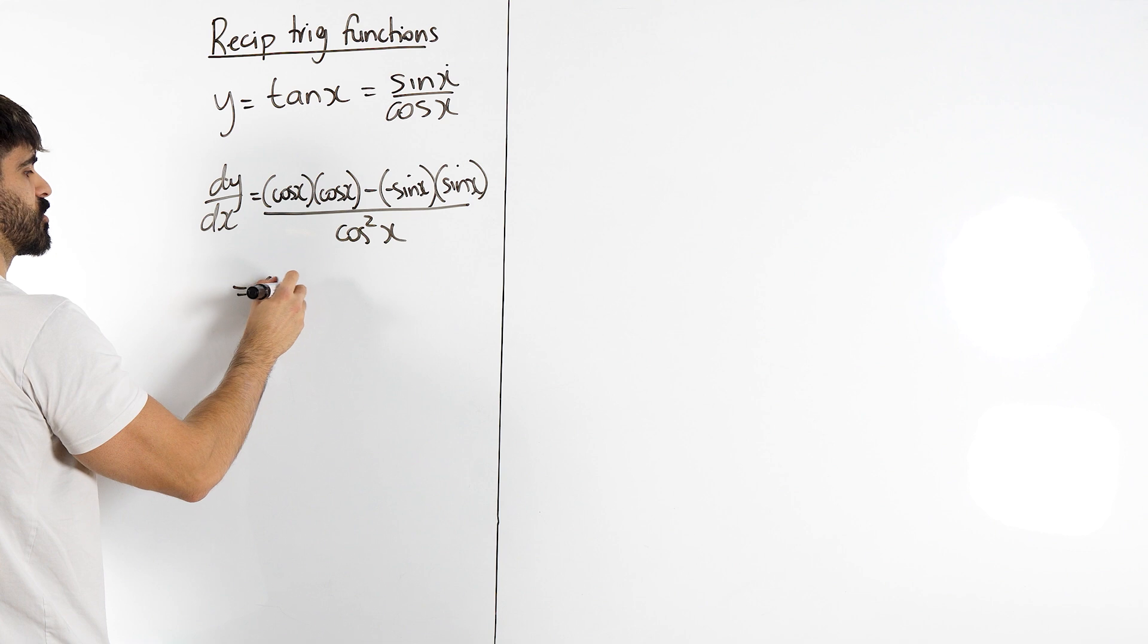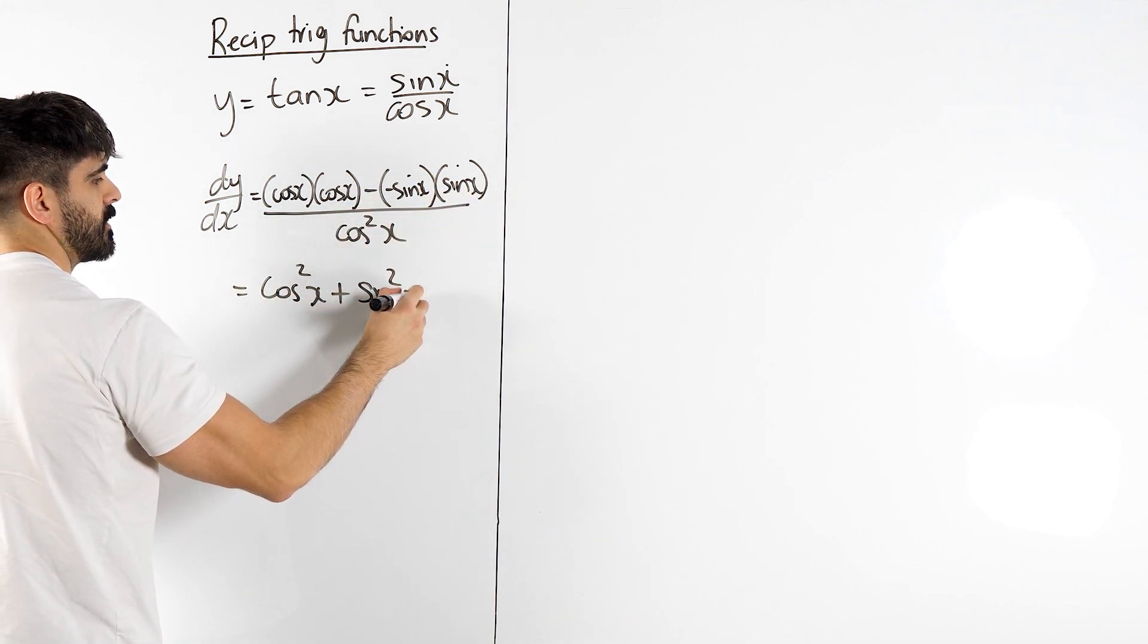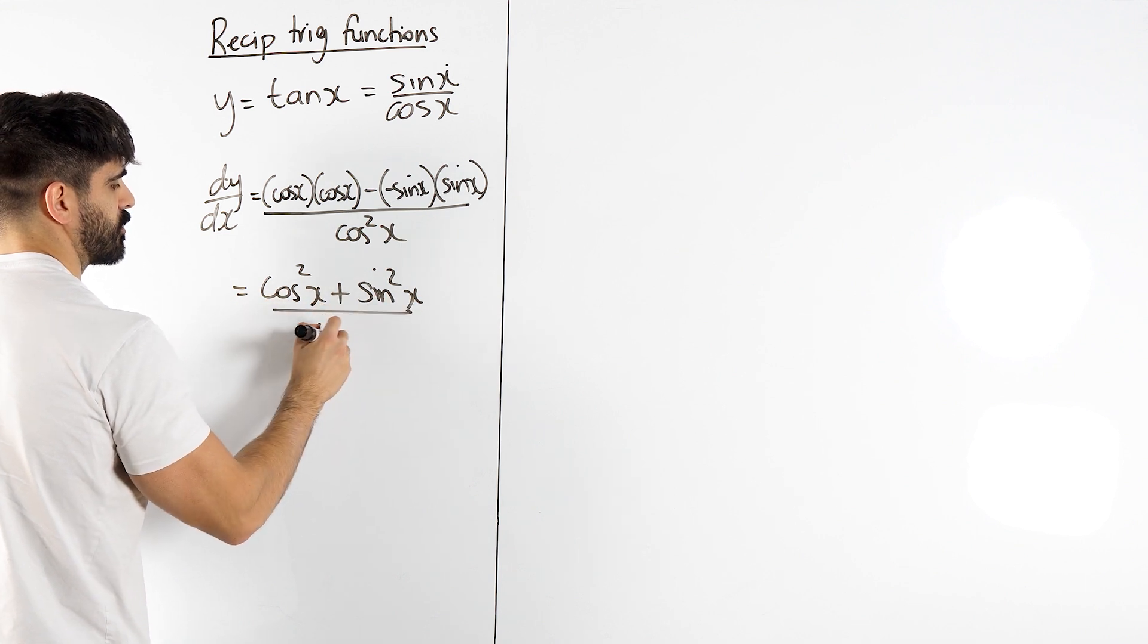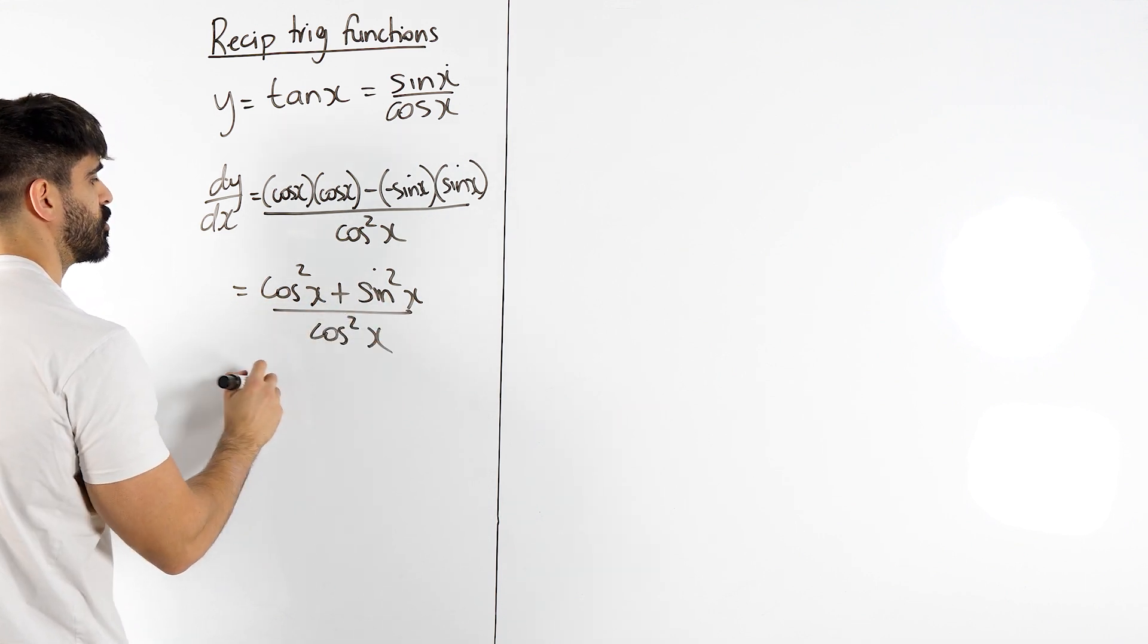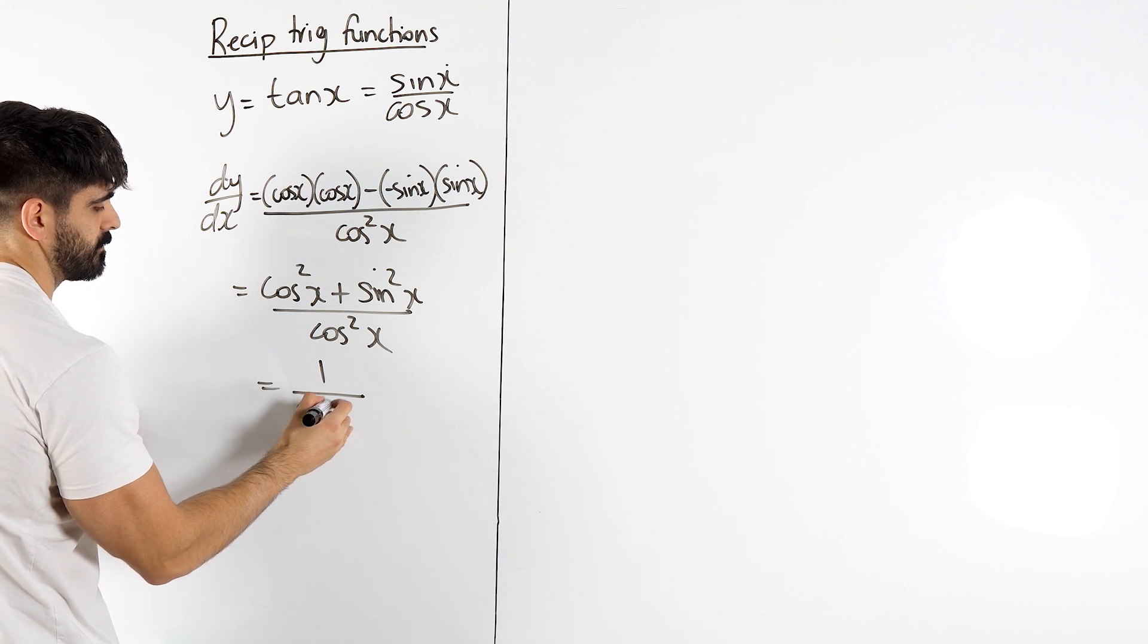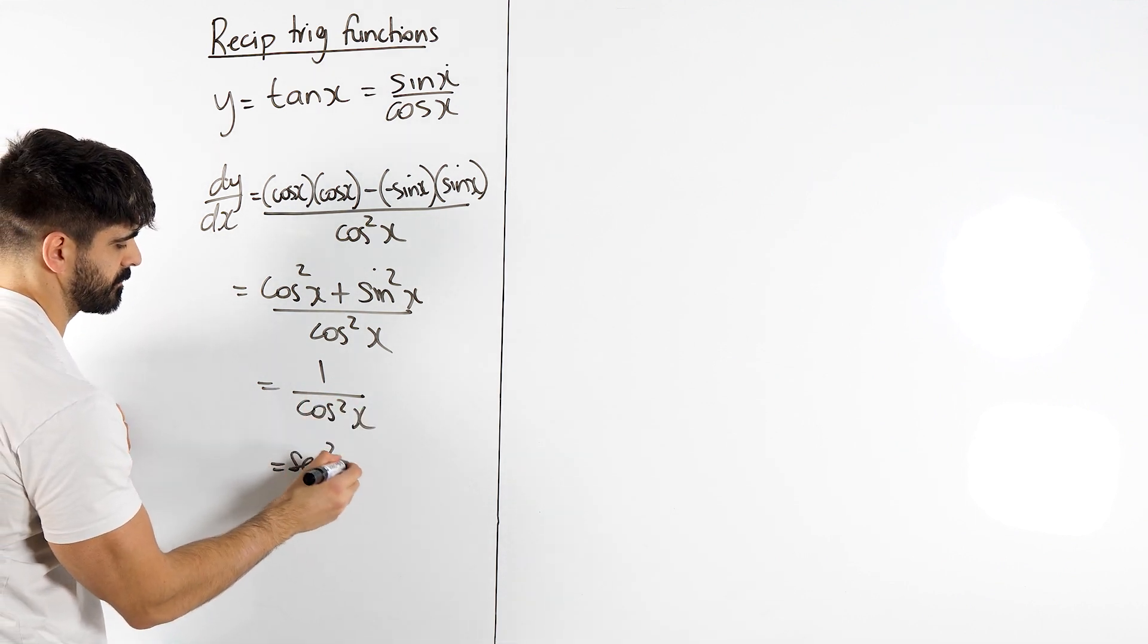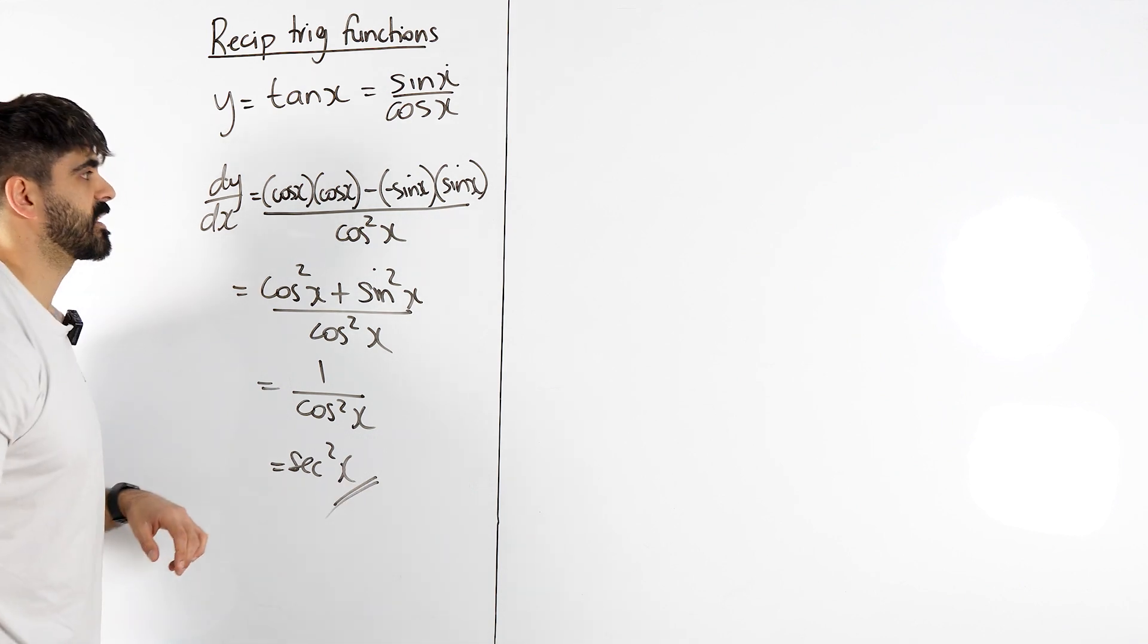Cos times cos is cos squared, the double minus is plus, sin squared all over cos squared. Then cos squared plus sin squared is one over cos squared, and there we go, we get sec squared. That's what tan differentiates to.